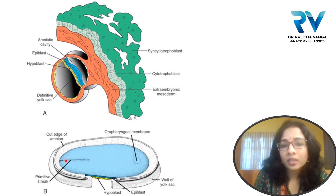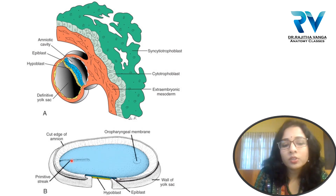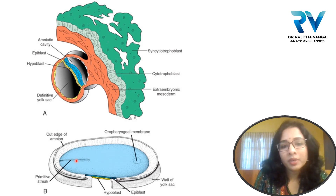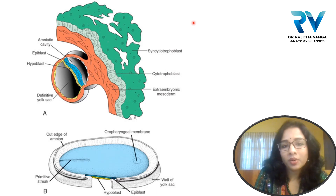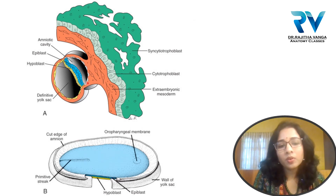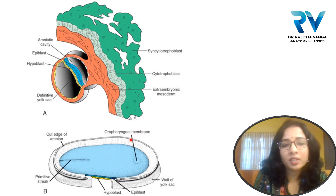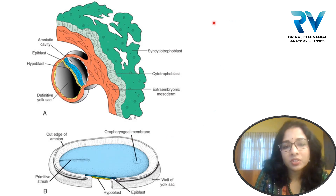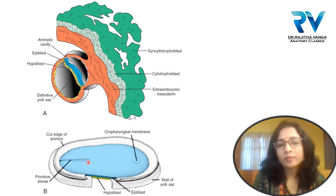At the beginning of the third week, around the 14th or 15th day of gestation, a longitudinal ridge appears in the midline at the caudal end of the dorsal aspect of the bilaminar embryonic disc. This longitudinal ridge is called the primitive streak. It is visible on the dorsal aspect of the embryonic disc, towards the amniotic cavity, and is formed due to the proliferation of epiblast cells. At the cranial end of the primitive streak, it thickens to form the primitive node.